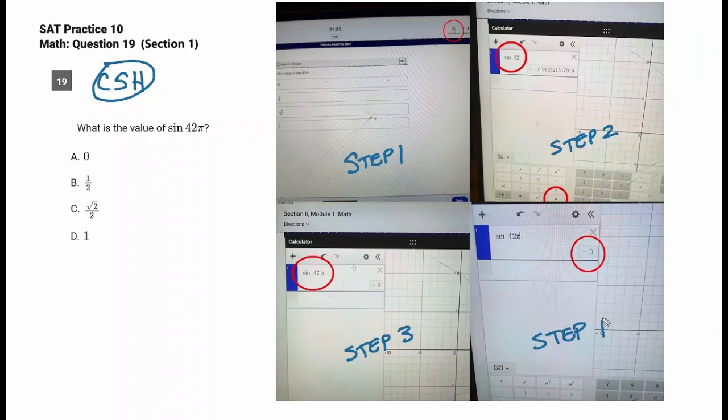And it's just literally punching numbers in a calculator. Step one, you go to the calculator that's on the SAT. You can also use your calculator. Step two, you type in sine, S-I-N, space, 42. Step three, you can write in pi or you can click on the little pi thing. It's going to put pi here. And when you do that, it's going to say equals zero.